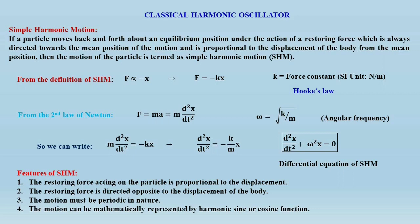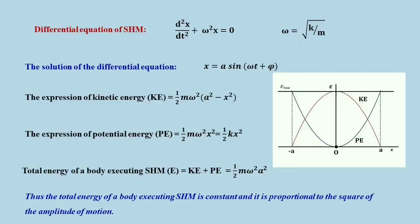The motion of the bob of a simple pendulum is an example of a classical harmonic oscillator. The key features of SHM are: the restoring force is proportional to the displacement, directed opposite to it, the motion is periodic in nature, and it can be expressed mathematically by a sine or cosine function. When we solved the differential equation d²x/dt² plus ω²x equals 0, we obtained the solution x equals A sine(ωt plus φ).